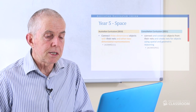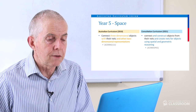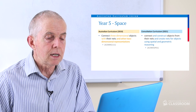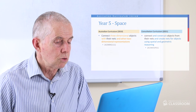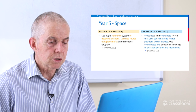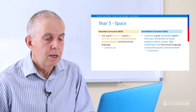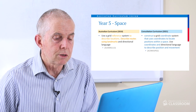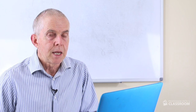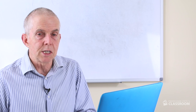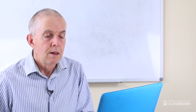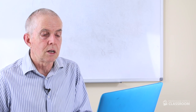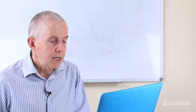Let's move straight on to space — Year 5 space, number one. Connect and construct objects from their nets — that's almost the same as the previous one — and create nets for objects using spatial and geometrical reasoning. The second one: construct a grid coordinate system that uses coordinates to locate positions within a space, and use coordinates and directional language to describe position and movement. It's interesting that it uses the word 'construct' — I think this is within the capabilities of Year 5 students. They will construct the grid coordinate system themselves to locate positions within space. It's well done, well written.